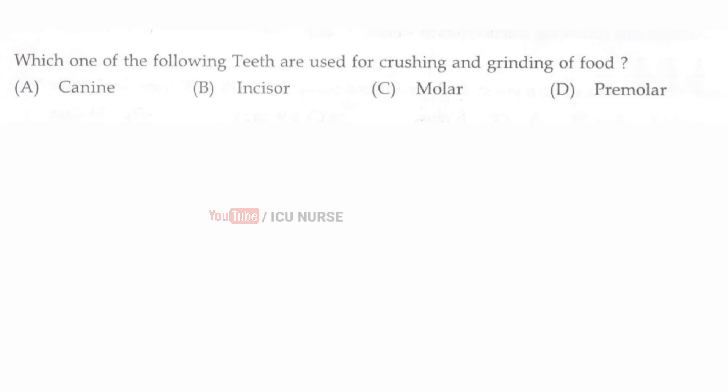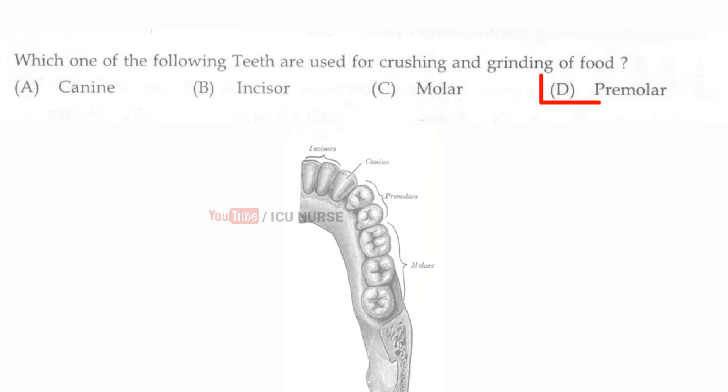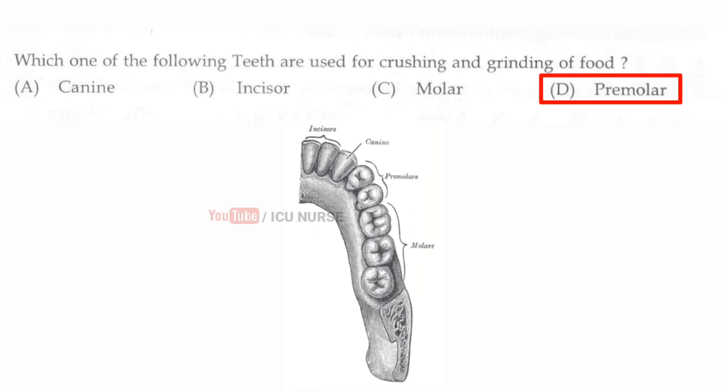Which one of the following teeth are used for crushing and grinding of food? The correct answer is D, premolar teeth.